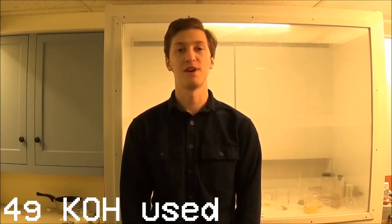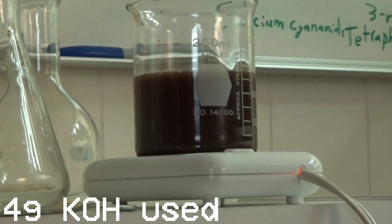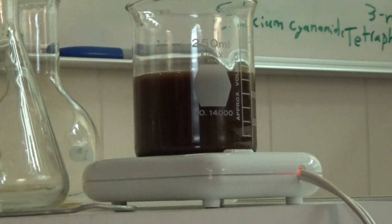This palladium solution could probably be used for the reaction, but I wasn't sure if the nitric acid would interfere, and the preparation I was following called for palladium chloride, so the next step was precipitating out the palladium using a few grams of potassium hydroxide. This gave me a nice chocolatey brown precipitate, which then had to be filtered off.